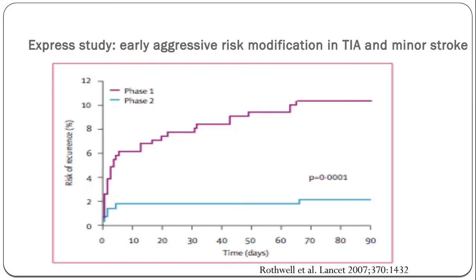If we know that stroke is very common and a substantial risk after a TIA, is there anything we can do to reduce that stroke? In Rothwell's EXPRESS trial, early intervention — antihypertensives and antiplatelets within 24 hours — showed a dramatic reduction in the incidence of stroke. This has been repeated in many publications and really underscores the importance of very early intervention. We have very good evidence to suggest that it can reduce the incidence of completed stroke.